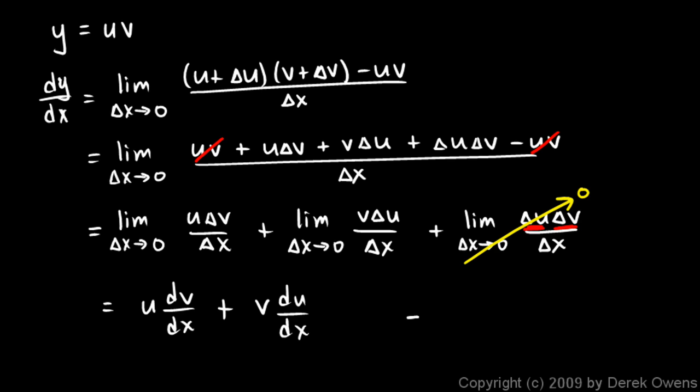And then this is what we're left with right here. And this could simply be written as u v-primed plus v u-primed. And that's exactly what we had earlier. u times the derivative of v plus v times the derivative of u. Or the first times the derivative of the second plus the second times the derivative of the first.